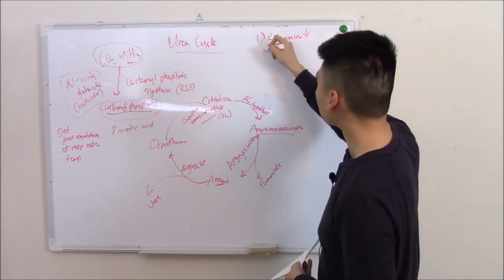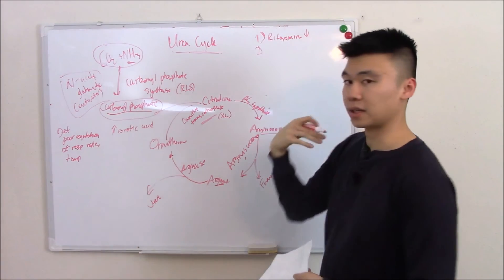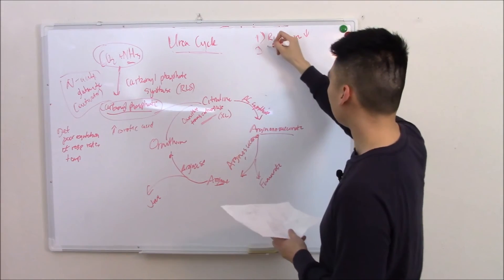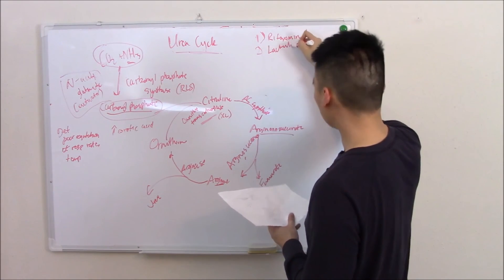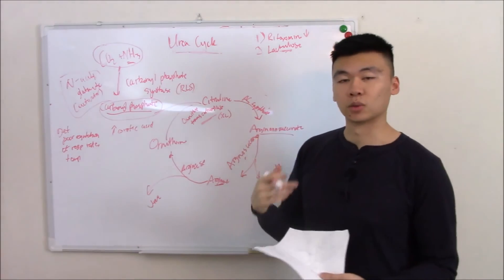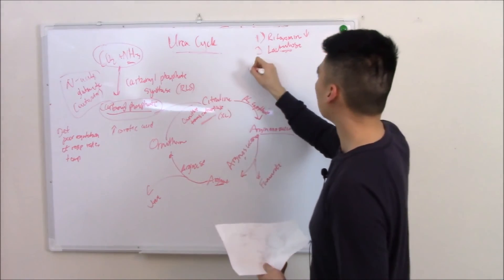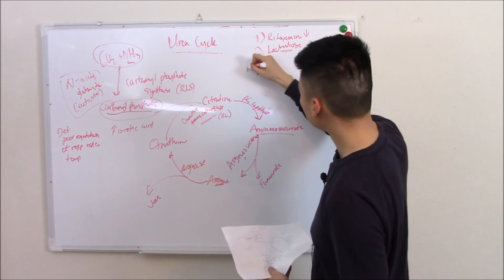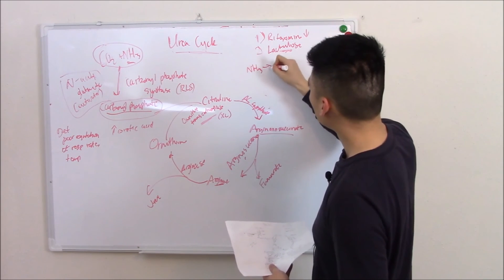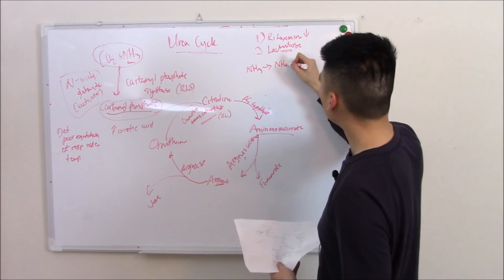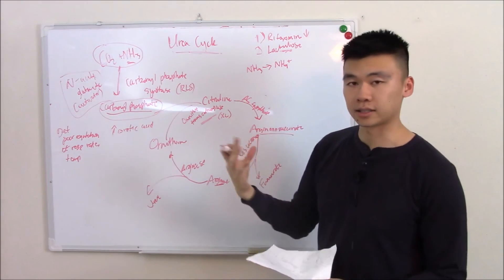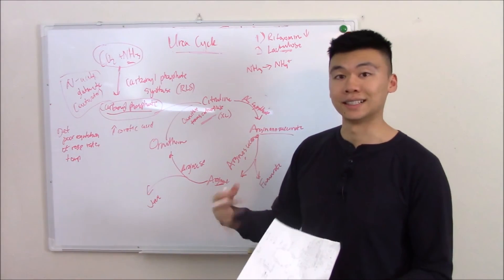Or we can actually use that gut bacteria for our benefit. We can give lactulose. Lactulose is basically food for bacteria - it eats it, releases acidic byproducts that turns ammonia to NH4+, and that is less soluble, you can get rid of it easier.